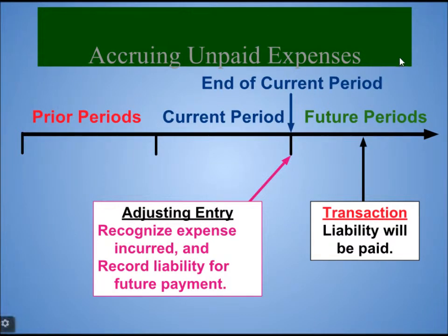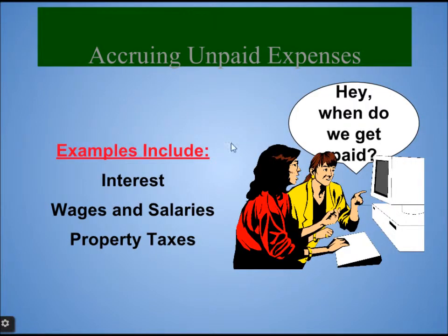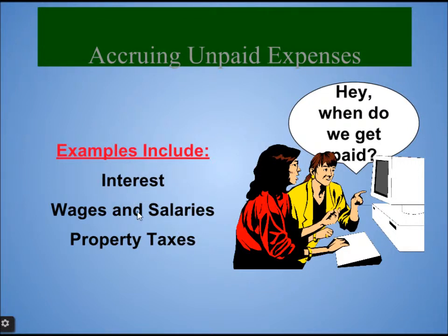Accruing unpaid expenses: recognize an expense incurred and record a liability for future payment at the end of the current period. The liability will be paid in the future. Examples include interest, wages and salary, and property taxes. These are expenses that we recognize at the end of the period, not in advance. So when you have worked for the entire month or entire week, you get paid at the end — these are accruing unpaid expenses.